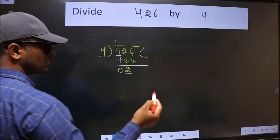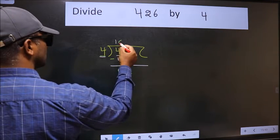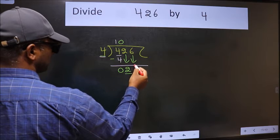And the rule to bring down the second number is we should put 0 here. Then only we can bring this number down.